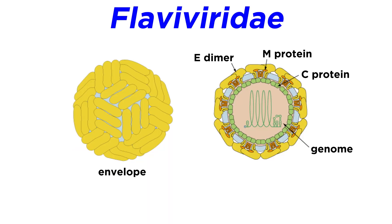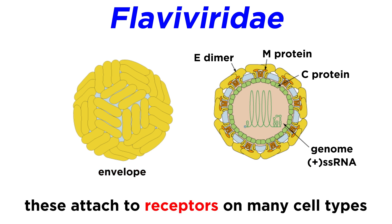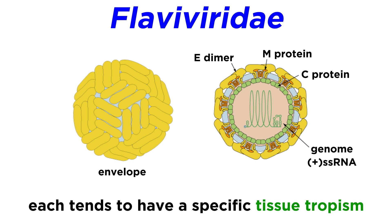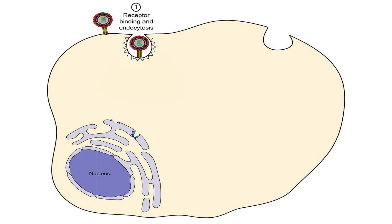Now back to the virus itself. As we mentioned, West Nile virus is part of the flaviviridae family. Flaviviruses in general have a positive strand RNA genome and an envelope, but no visible capsid structure. They attach to specific receptors on lots of different types of cells in lots of different species, though each individual virus tends to have a specific tissue tropism. That just means they only attack cells in a specific type of tissue, which can cause a little bit of variation in the way the disease presents. Similarly to rhabdoviruses, flaviviruses enter the cell by endocytosis. Then the viral envelope fuses with the endosome membrane, and the capsid and genome are set free into the cytoplasm of the cell.